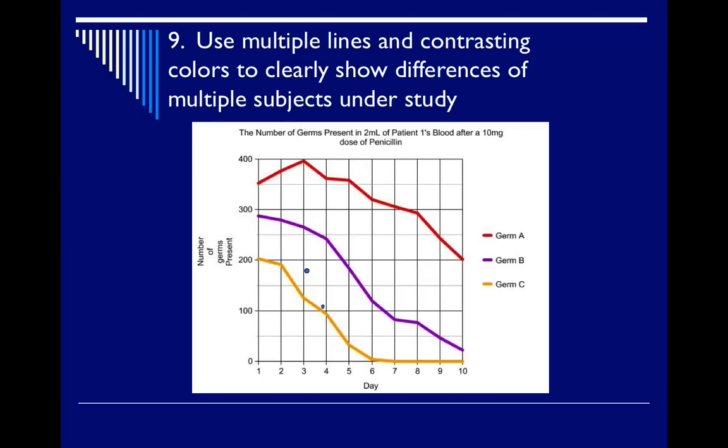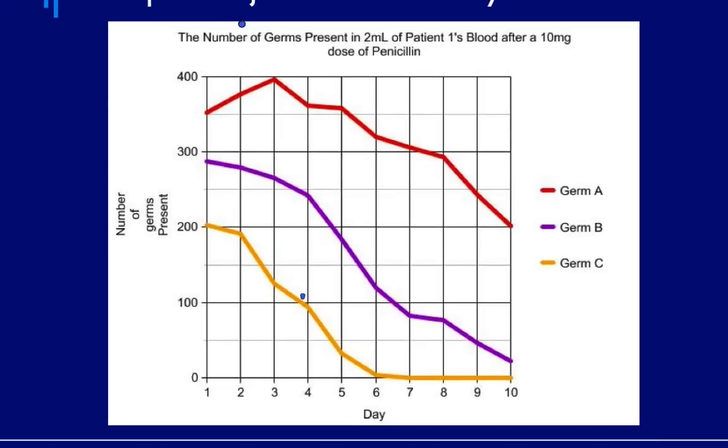And last rule, number nine. Use multiple lines and contrasting colors to clearly show the differences of multiple subjects under study. So, here we have a graph that says the number of germs present in two milliliters of patient one's blood after a 10 milligram dose of penicillin. So, in this case here, we have three germs present. And each one is responding to that dose of penicillin. But to clearly show it,